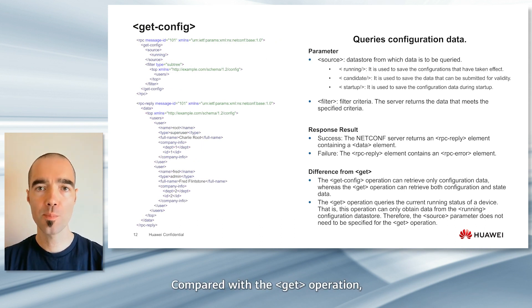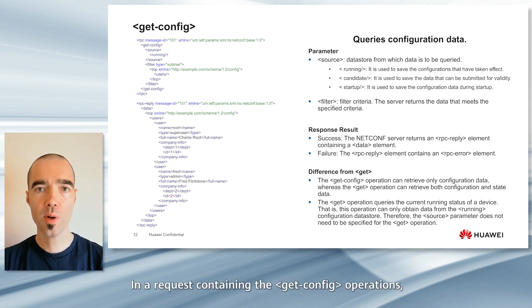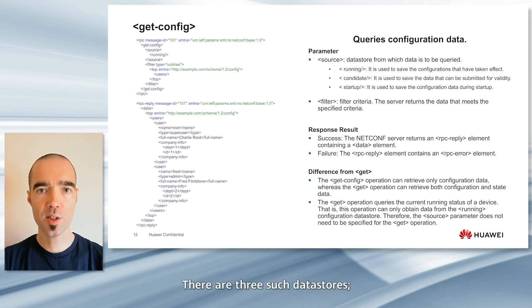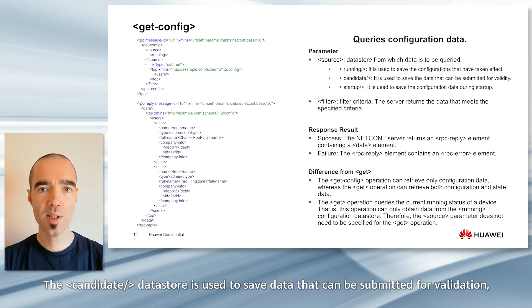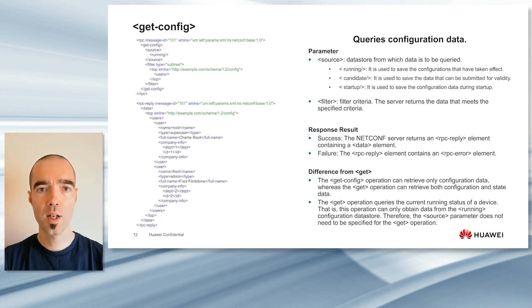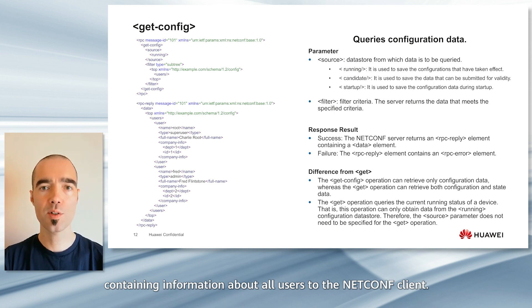Compared with the Get operation, the GetConfig operation can query only the configuration data of a device. In a request containing the GetConfig operation, the source parameter specifies the configuration data store from which data is queried. There are three such data stores: the running data store is used to save configurations that have taken effect; the candidate data store is used to save data that can be submitted for validation; and the startup data store is used to save configuration data during startup. In this example, source specifies the running data store and filter is defined to query information about all users. The device returns a response message containing information about all users to the NETCONF client.